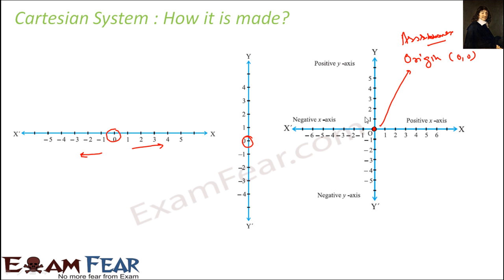Similarly, if you move up, your value increases — one, two, three, four, five, six like that. If you move down, it becomes minus one, minus two, minus three, minus four, minus five. Please pay attention here; this is a very critical concept, designed by René Descartes.